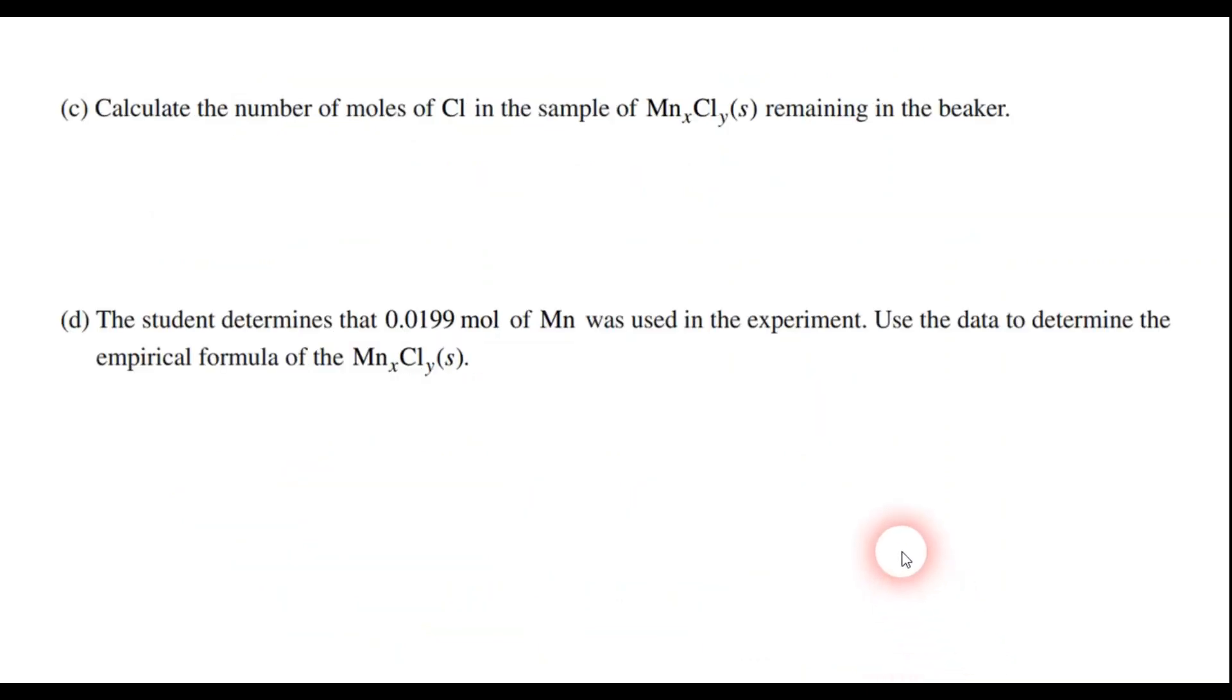So hopefully you got that as your answer. So one point for that one as well. Part C says calculate the number of moles of chlorine. So on this one, we're going to take the number of grams that we got earlier, the 1.411 grams of chlorine, and just convert that to moles. So it's 35.45 grams in one mole of chlorine, and that gives us 0.03980 moles of chlorine. So give yourself one point if you got that correct as well.